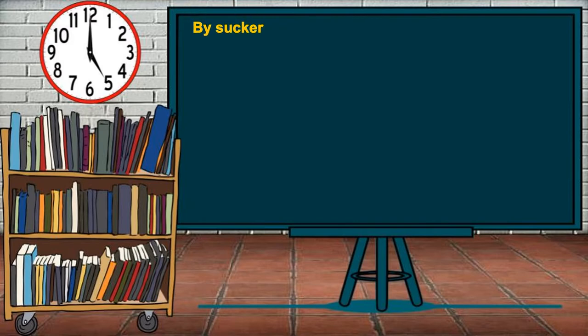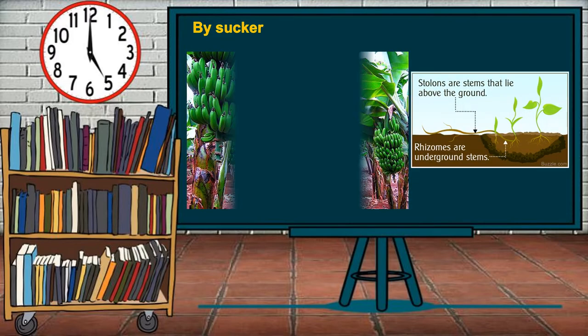By sucker is another natural method. A sucker is a stem or shoot that springs from the roots. In this method, a single parent plant can grow many new plants on the lower part of the stem or on shoots from the roots. Example is bananas.